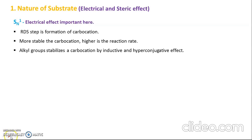The first factor is the nature of the substrate. When talking about the nature of substrate, two factors must be kept in mind: electrical effect and steric effect. For SN1, which is a unimolecular reaction, compared to steric effect, the electrical effect is more important. The earliest step is formation of a carbocation — the carbocation carbon is tri-coordinated, but the starting material is four-coordinated, so coordination is decreasing and steric effect is not so important.